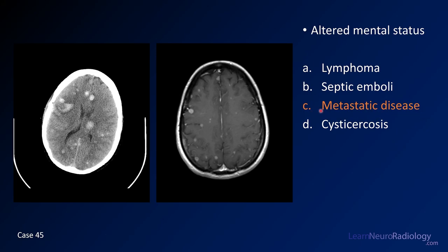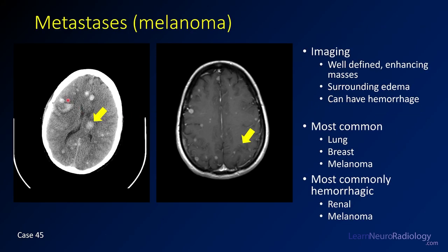This is a case of metastatic disease. On CT you see multiple hyperdense masses — one has a hematocrit level — these are hemorrhagic masses with small scattered areas of hemorrhage, many at the gray-white junction. Post-contrast imaging confirms numerous masses. Because of the location and the associated enhancement, you have to be thinking about metastatic disease.